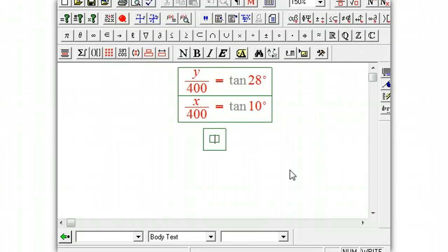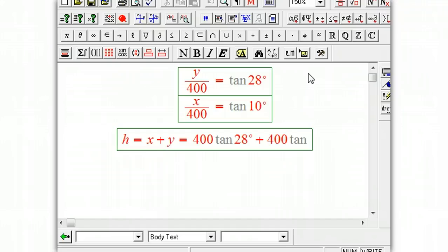We know that we want x plus y. The height of the tower is x plus y. Solving those equations, we just get 400 tan 28 degrees plus 400 tan 10 degrees. Now it's really important that this is not the same as 400 times tangent of 38 degrees.